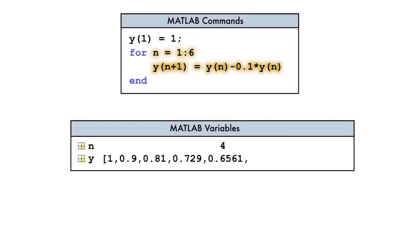When the loop variable n takes on the last value in the vector, the body of the for loop is executed one last time, and the for loop is terminated.